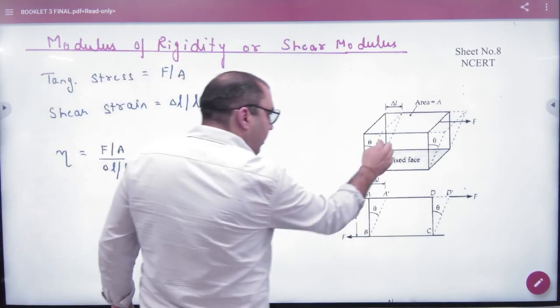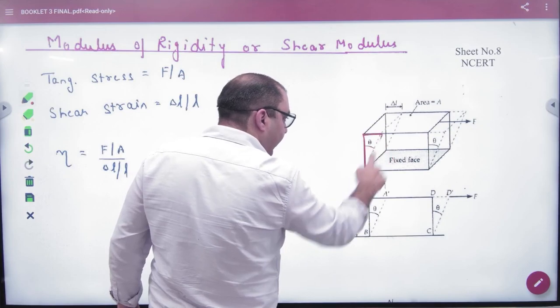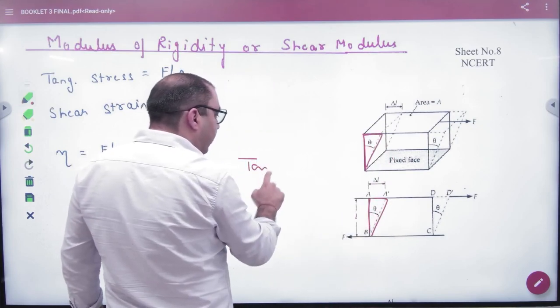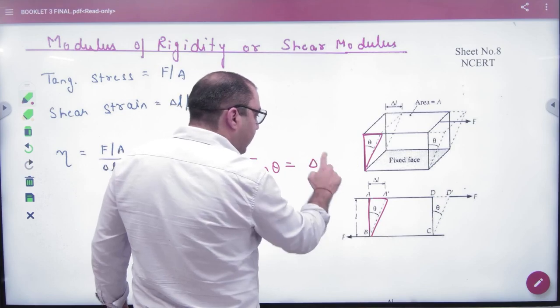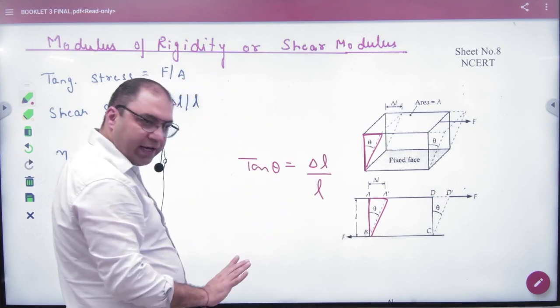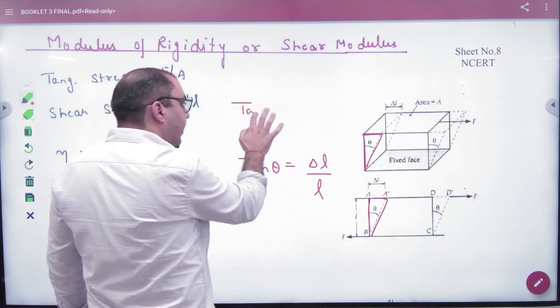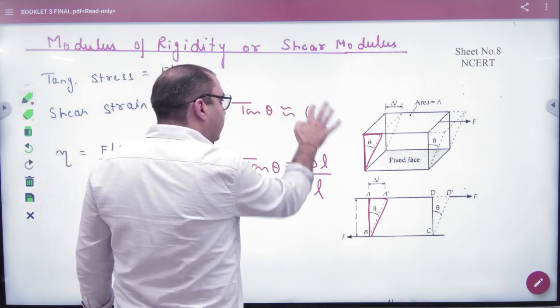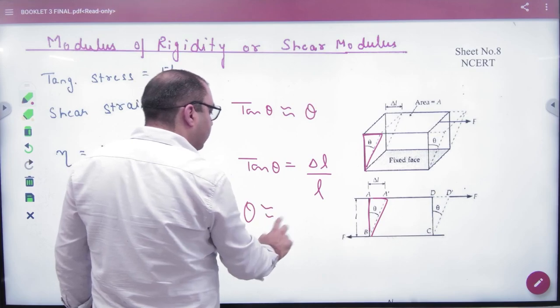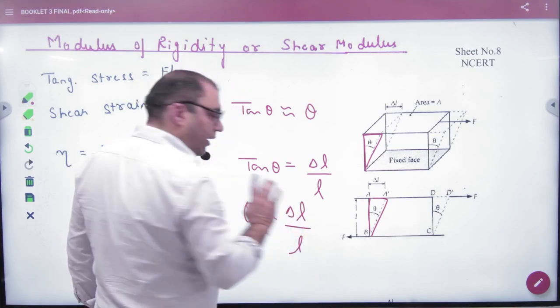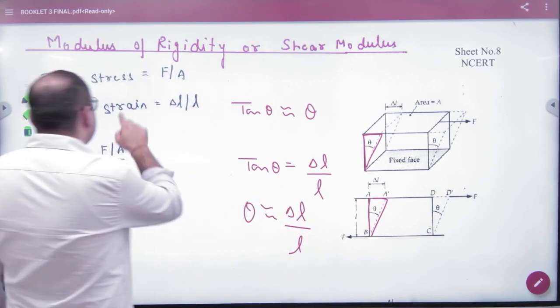Now look at this right angle triangle. I am making this right angle triangle. What will be the value of tan of theta? Delta L by L. Now because these angles are very small, and in maths, if these angles are small, what can we call tan of theta approximately? Theta. So what will be theta approximately? Delta L by L. So you can put theta here.